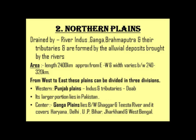Northern Plains is 2400 km in length and the width varies between 240 to 320 km. Moving from west to east, these plains can be divided into three divisions. The westernmost portion is Punjab Plains, which lies just below the Punjab Himalayas and is fed by the Indus and its tributaries. The term Punjab means the region fed by two water bodies, and the larger portion of Punjab Plains lies in Pakistan.